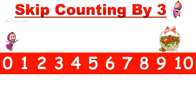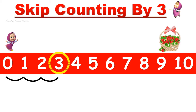Now let us understand skip counting by three. Here we have little Masha to help with this. She has to reach the basket of strawberries, and for that she has to skip count by three. Masha is standing on number zero and moves three steps forward: one, two, three — so the number is three, and she jumps on number three.